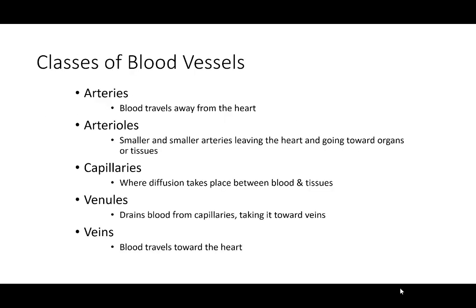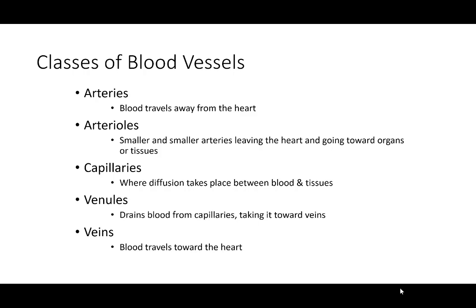The classes of blood vessels we have are arteries, which take blood away from the heart. Veins bring blood back to the heart. We're going to discuss arterioles and capillaries. Venules are the smaller veins that drain blood back away from the capillaries and bring it to the larger vein so it can return to the heart.